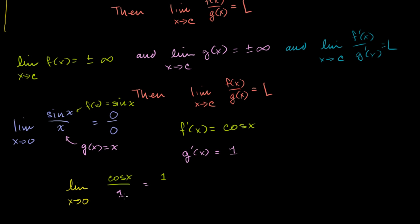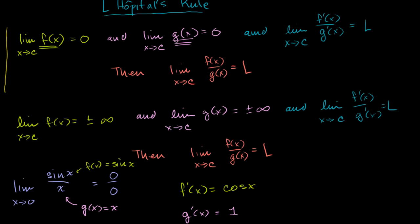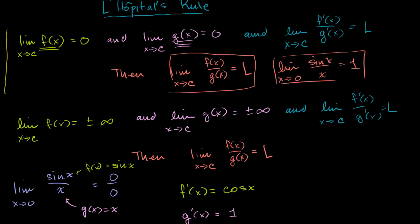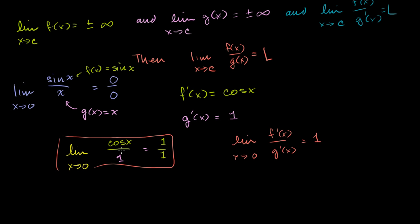So we just saw that the limit as x approaches 0 of f′(x) over g′(x) is equal to 1 — this limit exists and equals 1, so we've met all of the conditions. The limit of sine of x as x approaches 0 is 0; the limit of x as x approaches 0 is 0; and the limit of cosine of x over 1 is 1. So all the top conditions are met, and therefore the limit as x approaches 0 of sine of x over x must be equal to 1. I'll do more examples in the next few videos.